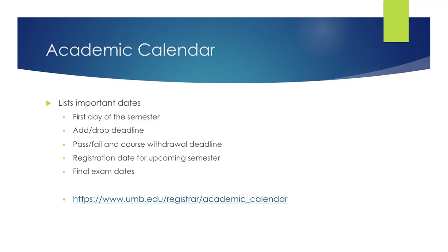Successful students understand the university's academic calendar, which can be found on the registrar's web page. It provides important information such as when the semester begins, the add-drop deadline, the pass-fail and course withdrawal deadline, registration dates for upcoming semesters, final exam dates, and holidays and dates the university is closed. Please note that the regular and College of Advancing and Professional Studies (CAPS) calendars differ, so it's important to be aware of the classes you're enrolled in and the corresponding deadlines. Most likely your online courses will be offered through CAPS, but if you take an on-campus regular section course, the start and end dates may differ.